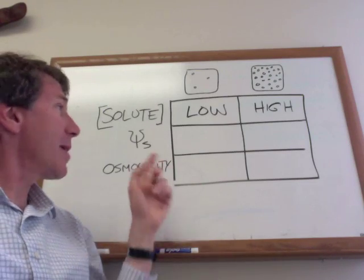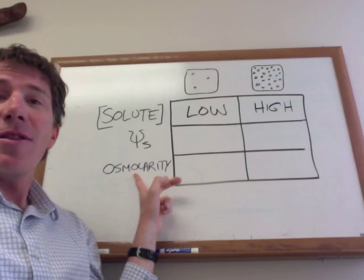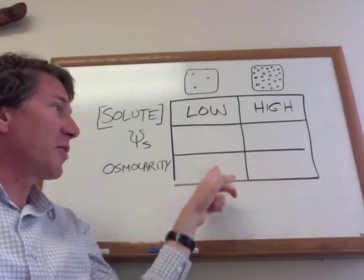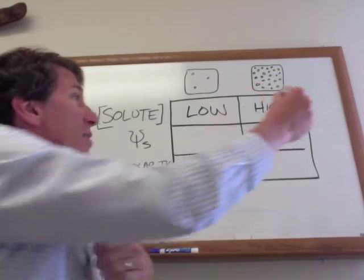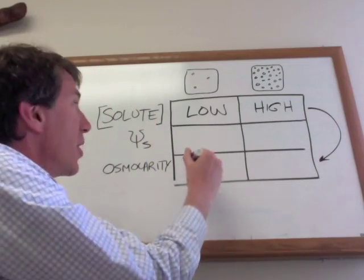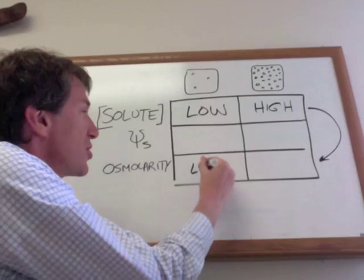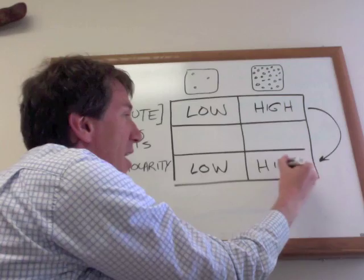Now what we're going to think about is what that means as far as the solute potential and also the osmolarity of these two cells. Well, osmolarity, this is the one that's easiest to figure out because there's a direct relationship between the solute and the osmolarity. So low solute concentration means low osmolarity. High solute concentration means high osmolarity.